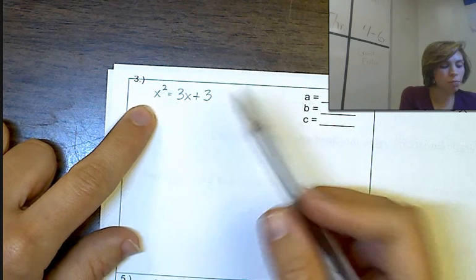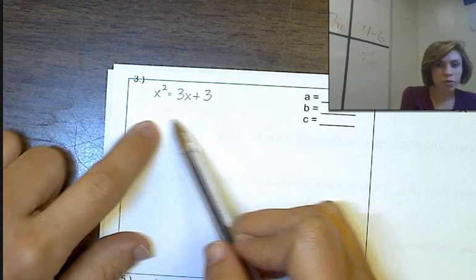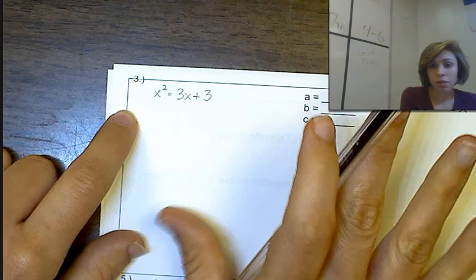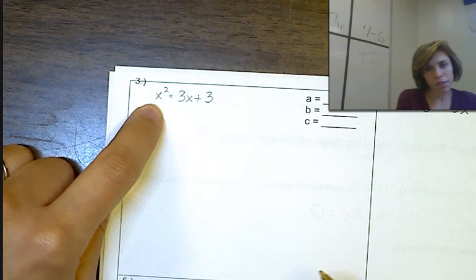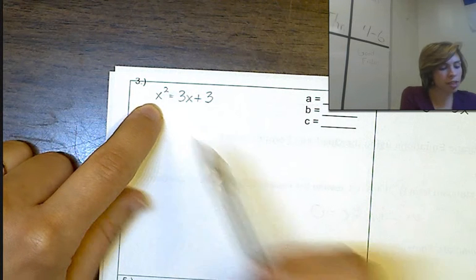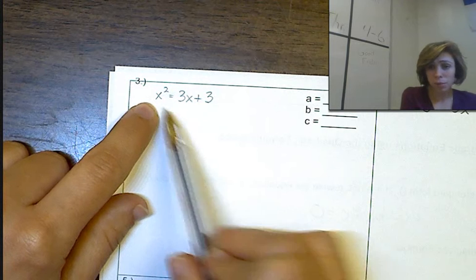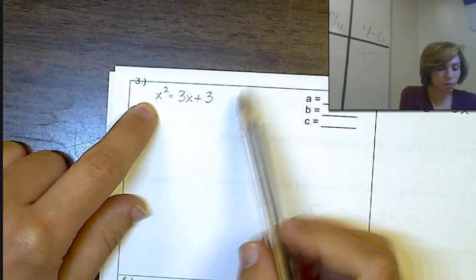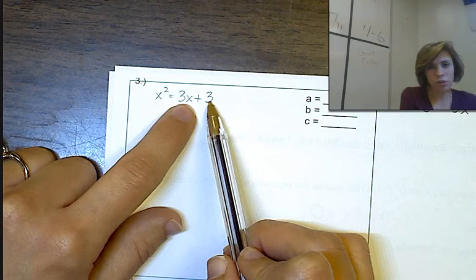So we're going to move our 3x and our 3 over to this side. The reason for that is that we want to keep our x squared positive. If at all possible, we want to keep that positive. So we're going to keep the x squared where it is, because if we moved it, it would turn negative. But we don't want that to happen, so we're going to have to move these other two terms over to the other side.